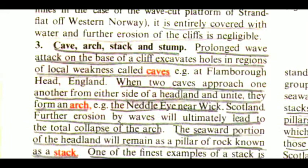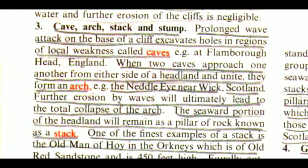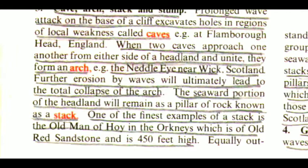The third one is Cave, Arc, Stack and Stump. Prolonged wave attack on the base of a cliff excavates holes in regions of local weakness called caves — example, at Flamborough Head, England. When two caves approach one another from either side of a headland and unite, they form an arch — example, the Needle Eye near Wick, Scotland. Further erosion by waves and tilt will ultimately lead to the total collapse of the arch.